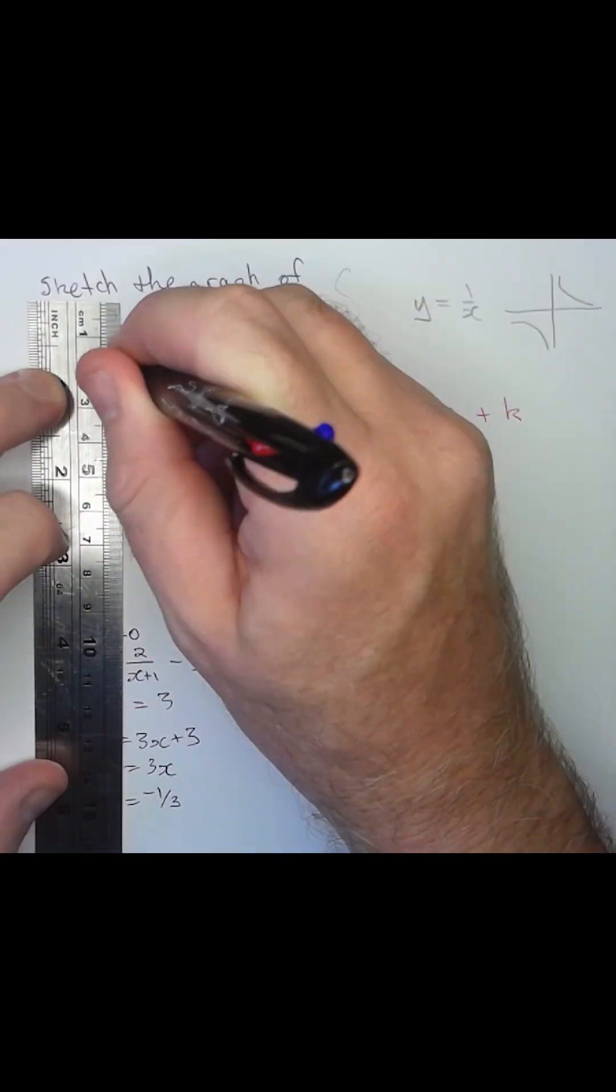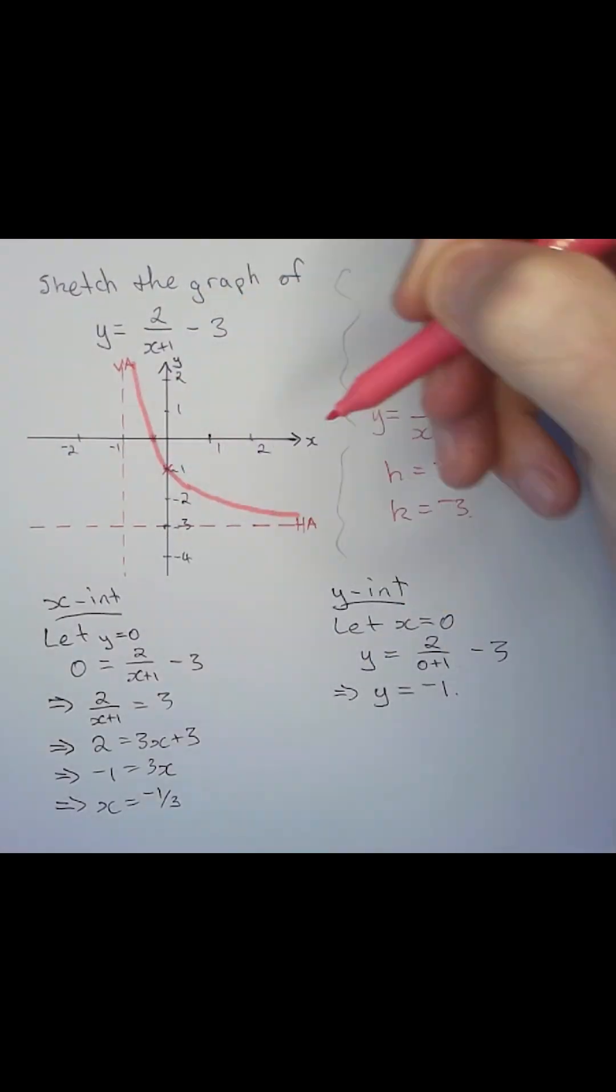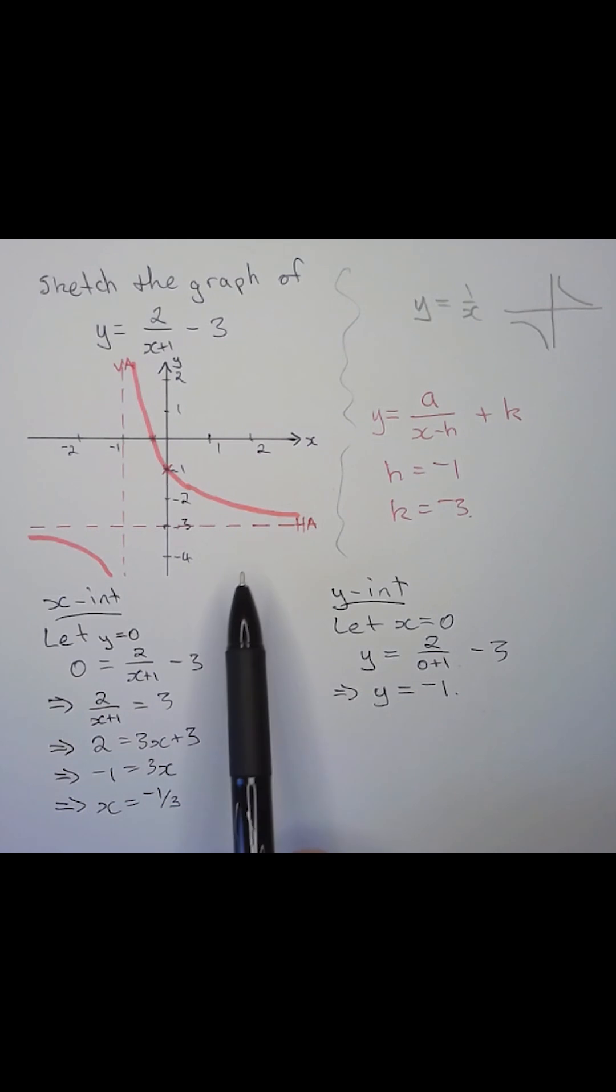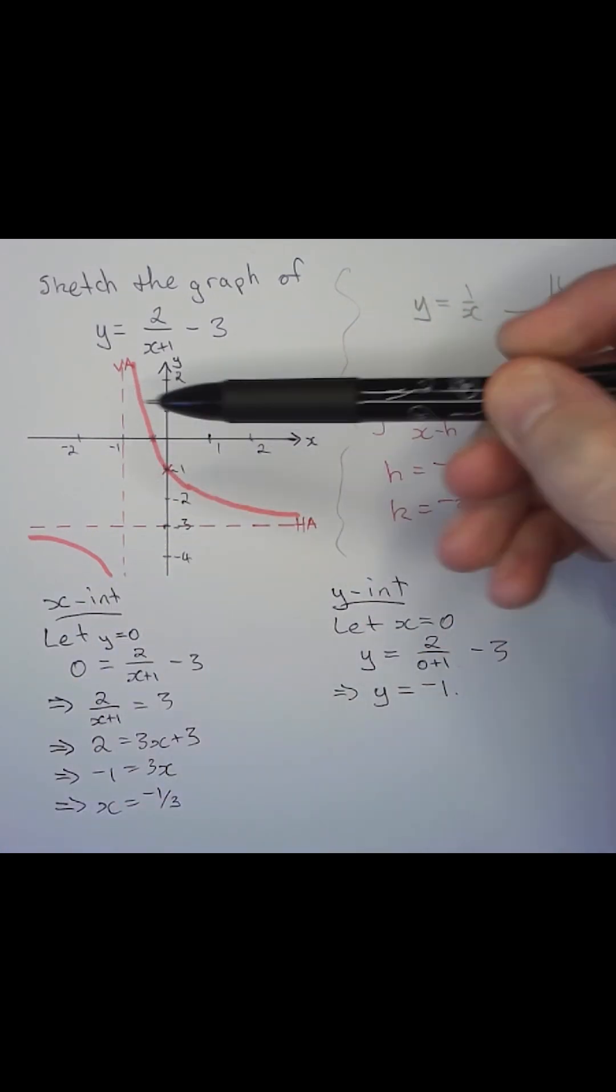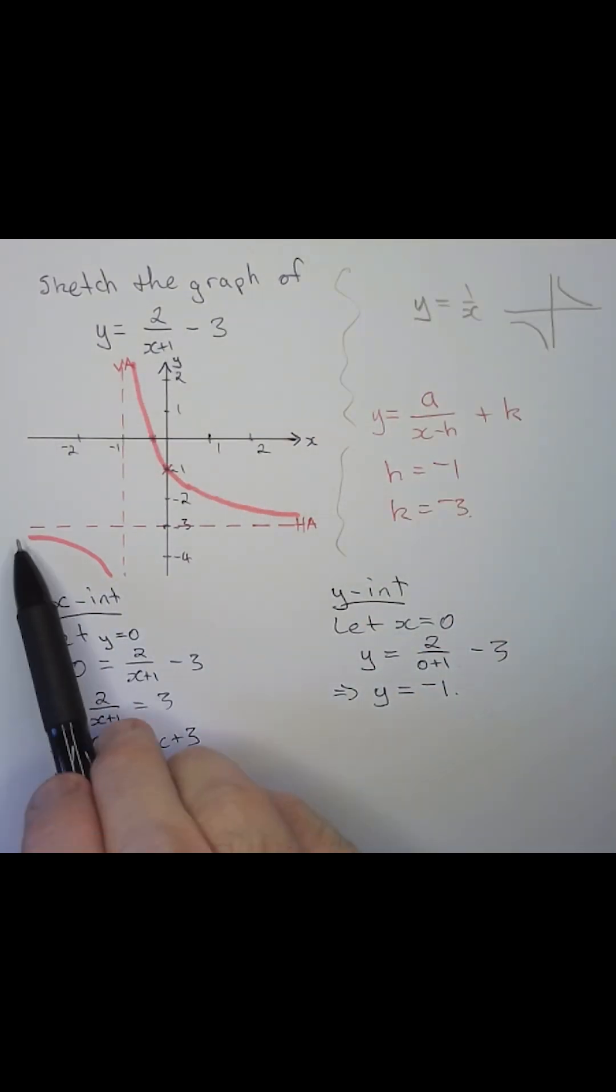Putting this all together, we have an x-intercept at minus 1 third, a y-intercept at minus 1, a horizontal asymptote at minus 3, a vertical asymptote at minus 1, and so our curve will look like this when sketched.